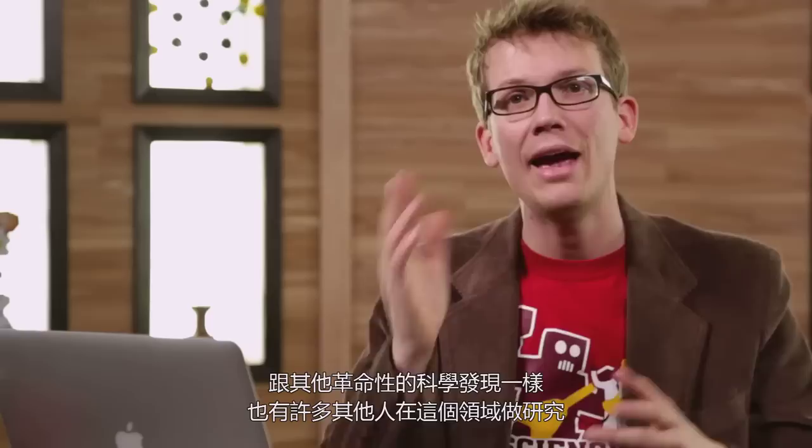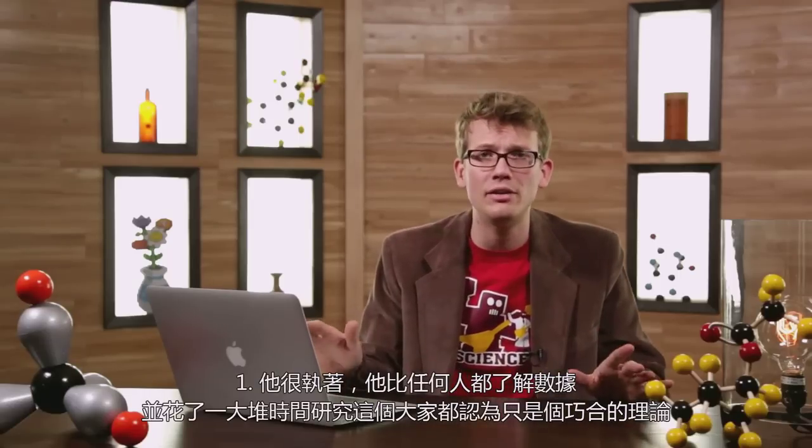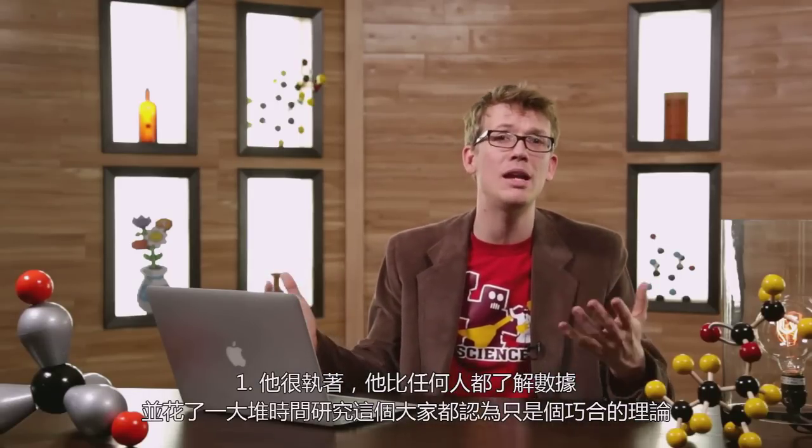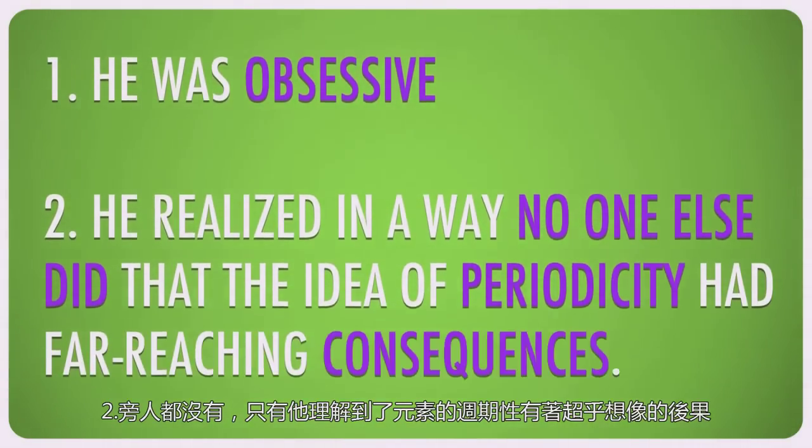Like a lot of other obsessive scientists, Mendeleev never thought he was done with his table, so he held it back for quite a while, only publishing it as part of a new chemistry textbook he was working on as a way to make some quick cash that he needed. And as with many other scientific revelations, there were a number of other people hot on this discovery's trail. As many as six people published on the periodicity of elements at roughly the same time as Mendeleev, but a few things set him apart. One, he was obsessive — he knew the data better than anyone else. And two, he realized, in a way no one else did, that the idea of periodicity had far-reaching consequences.